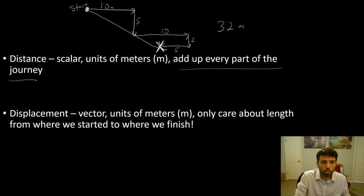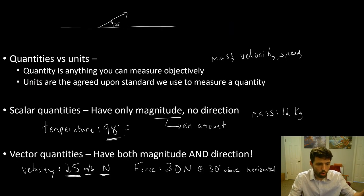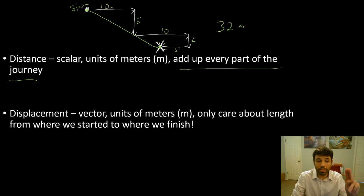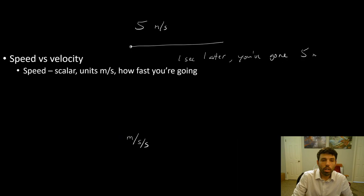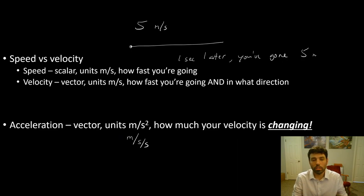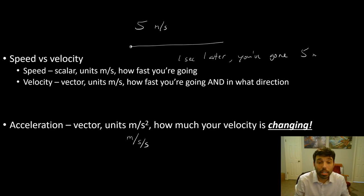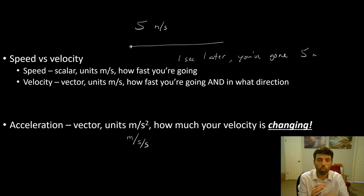So let's recap what I want you to get out of this video: understand what a quantity and unit are; know the difference between scalar and vector quantities; know the difference between distance and displacement; understand how to draw vectors with arrows and how to add them tail to tip to find the resultant vector; and know speed versus velocity, and what acceleration means. Know their units. If you have any questions, hit me up on Remind, email, or text, or talk to me in class. See you next time — bye!